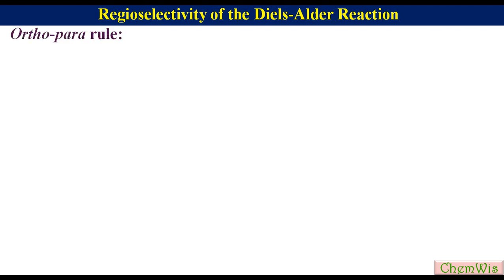Hello friends, today we are going to discuss regioselectivity of the Diels-Alder reaction. The regioselectivity of the Diels-Alder reaction of unsymmetrical diene with unsymmetrical dienophile can be predicted by the ortho-para rule.